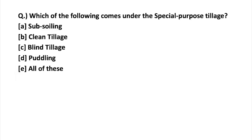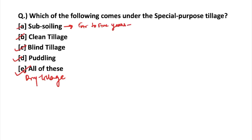The next question: which of the following comes under special purpose tillage? As the name suggests, special purpose tillage operations are intended to serve special purposes. The different methods include subsoiling, clean tillage, blind tillage, puddling, and dry tillage — all are methods of special purpose tillage. Subsoiling is used to break the hard pan which is beneath the plowing layer; it is done once in four to five years — not based on the cropping season, but just to break hard rock layers.